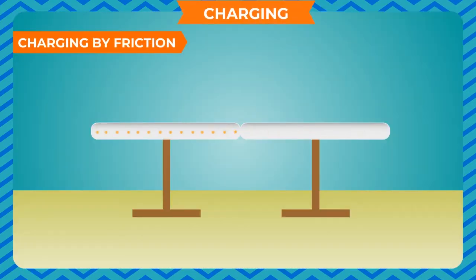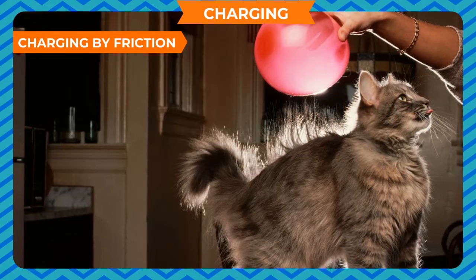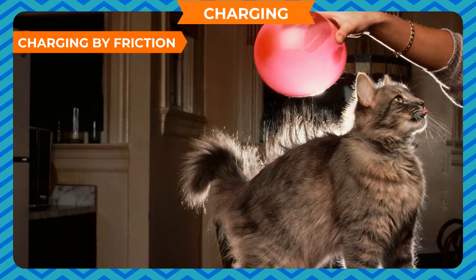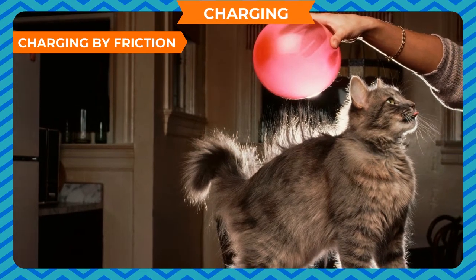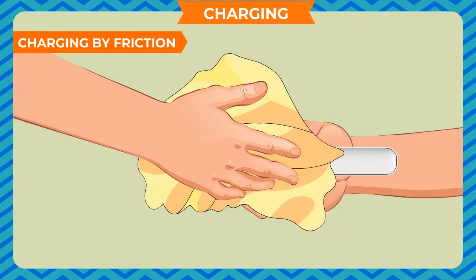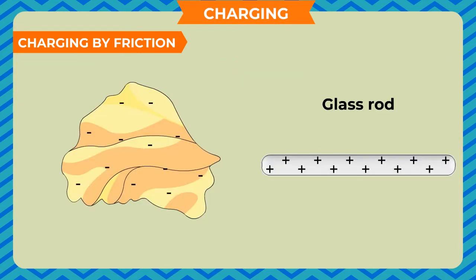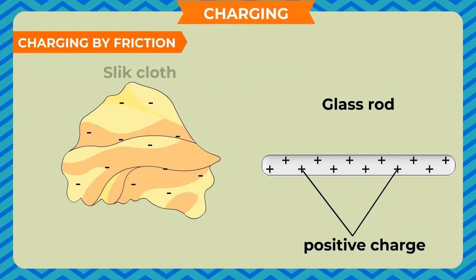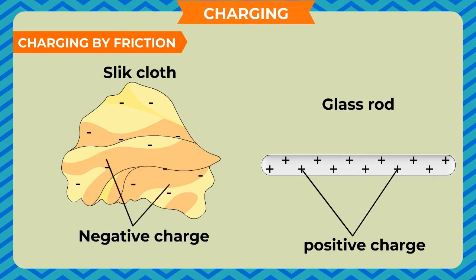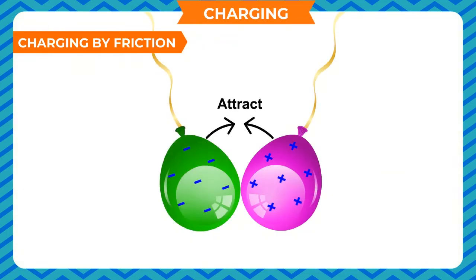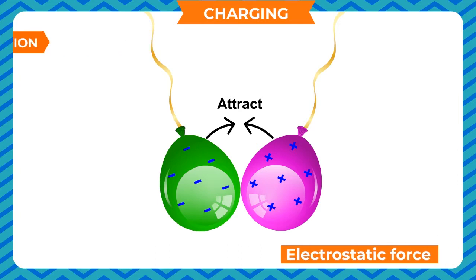Charging by friction: When two bodies are rubbed together, there is friction between them which makes them charged. When you rub a glass rod with silk, the glass rod acquires a positive charge and the silk cloth acquires a negative charge. Thus, a body can be charged by friction. These two oppositely charged bodies attract each other with a force called electrostatic force.